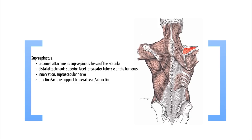Supraspinatus — its proximal attachment is the supraspinous fossa of the scapula, which you can see highlighted in red in the diagram here. Supraspinous fossa means above the spine of the scapula. Its distal attachment or insertion is into the superior facet of the greater tubercle of the humerus. It's innervated by the suprascapular nerve. Its main function or action is to support the humeral head and abduction as well.